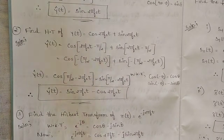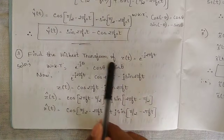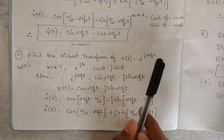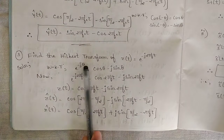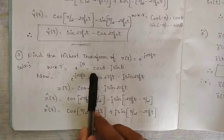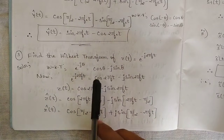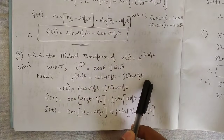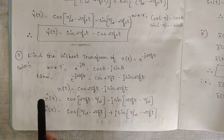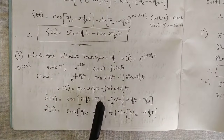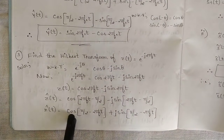The third problem: find the Hilbert transform of the exponential function z(t) = e^(−j2πfct). We use Euler's formula: e^(jθ) = cos θ − j sin θ (with θ = 2πfct here, but note the negative sign), giving z(t) = cos(2πfct) − j sin(2πfct). Taking the Hilbert transform: ẑ(t) = cos(2πfct − π/2) − j sin(2πfct − π/2). Interchanging terms and factoring gives cos(π/2 − 2πfct) + j sin(π/2 − 2πfct).